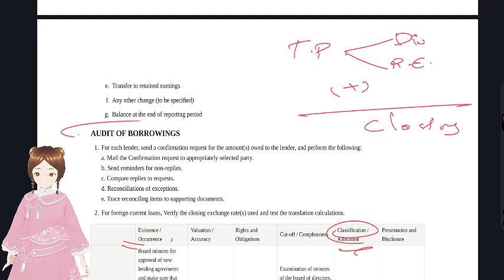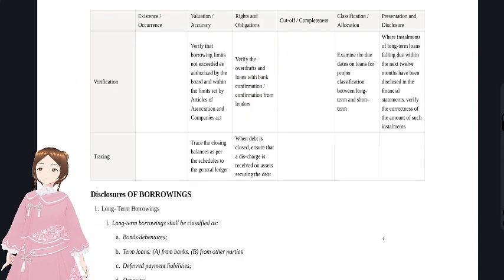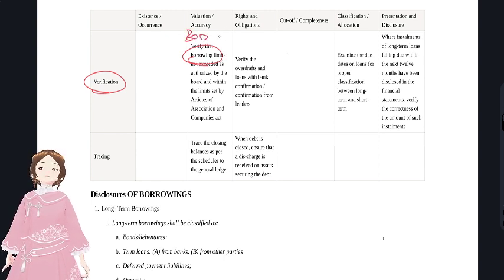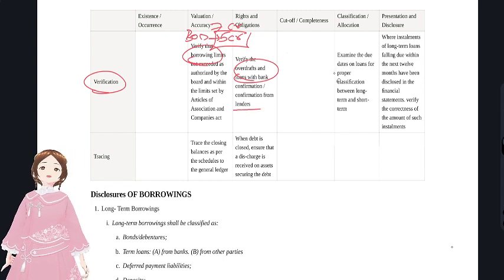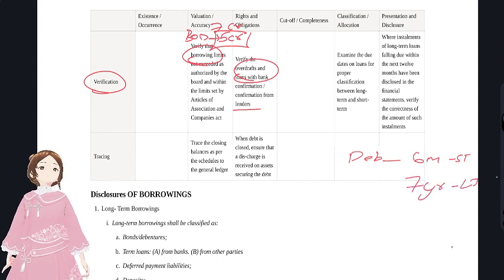For foreign currency loans, check exchange rates as well. For verification of borrowings: verify whether the board has exceeded its borrowing limits; verify ODs with bank confirmation letters. For classification: examine due dates on loans to properly classify between long-term and short-term. If debentures are repayable within six months, they are short-term; if for seven years, they are long-term.